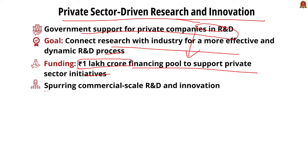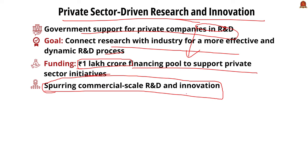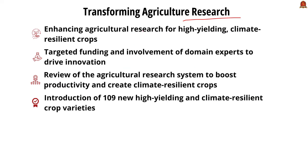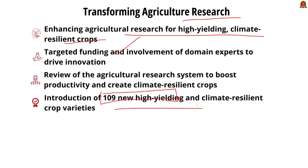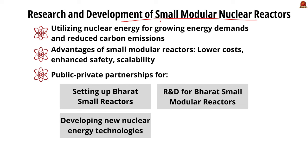On transforming agricultural research: the main aim is to develop new crop varieties that are high-yielding and resilient to climate change. The government aims to drive innovation in this sector through targeted funding and domain experts. A thorough review of the agricultural research system will be conducted, and nearly 109 new high-yielding and climate-resilient varieties across 32 field and horticulture crops will be introduced for cultivation.